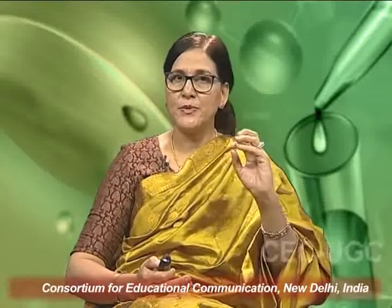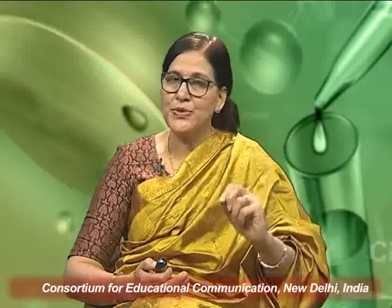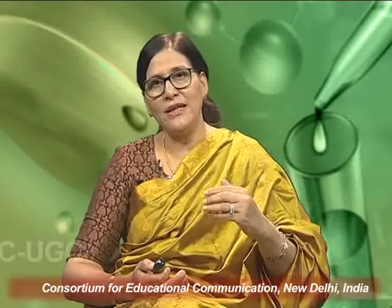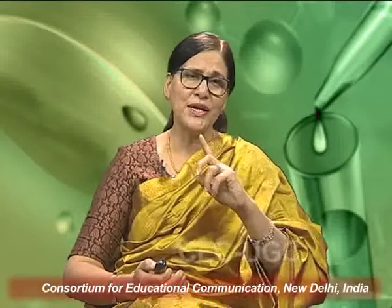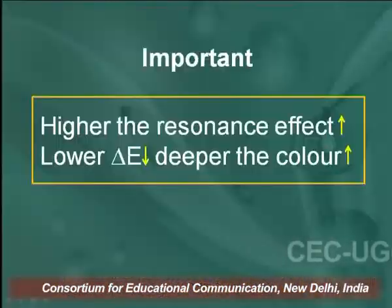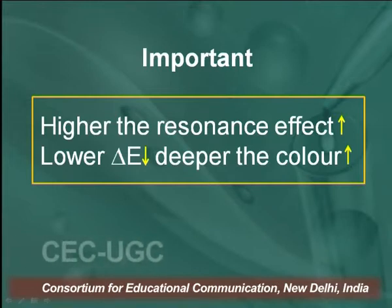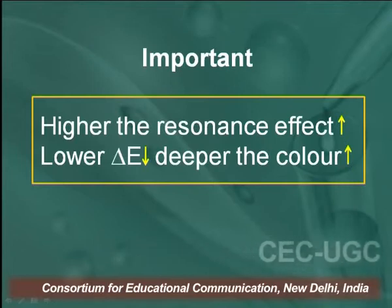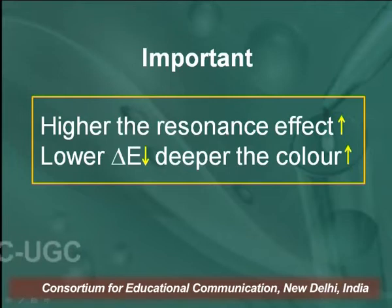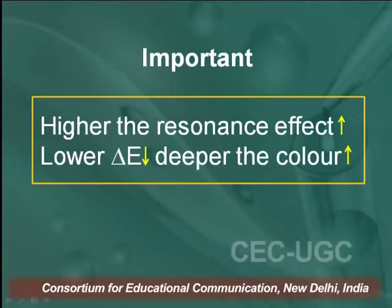In a hypsochromic shift, absorption occurs toward lower wavelength but higher energy is required. It is important to remember: higher the resonance effect, lower the delta E value, and deeper the colour. Deepening of colour takes place on the basis of delta E value and resonance effect — higher the resonance effect, lower the delta E value, and the greater the deepening of colours.